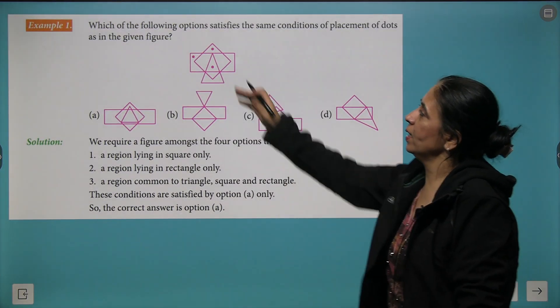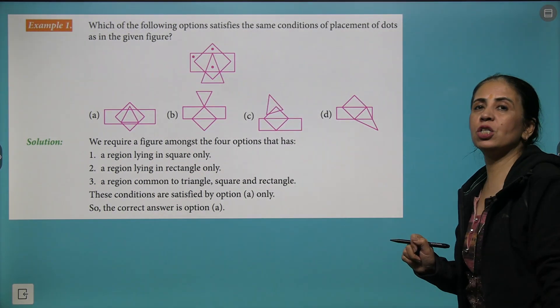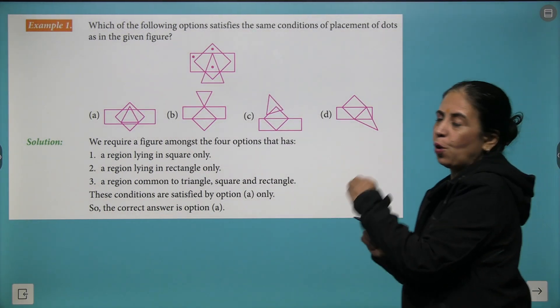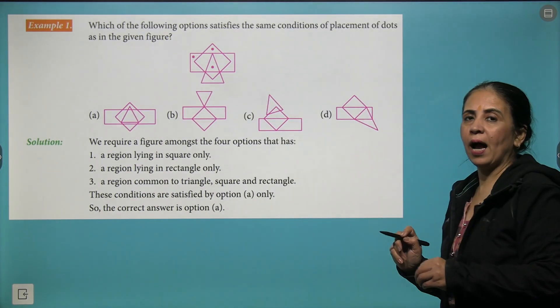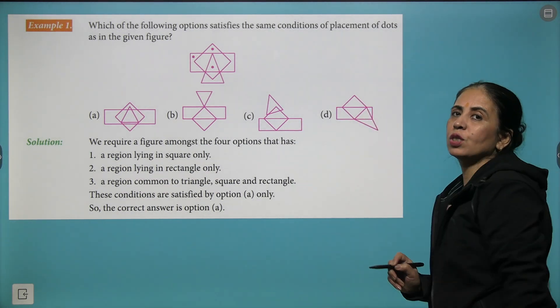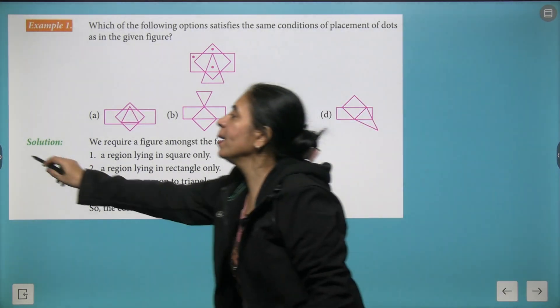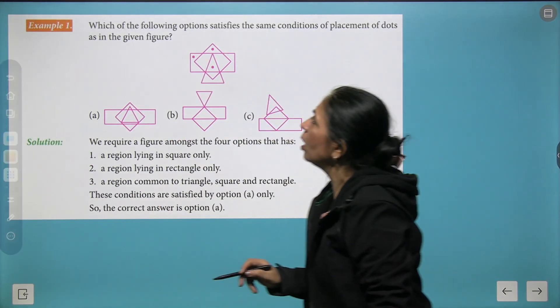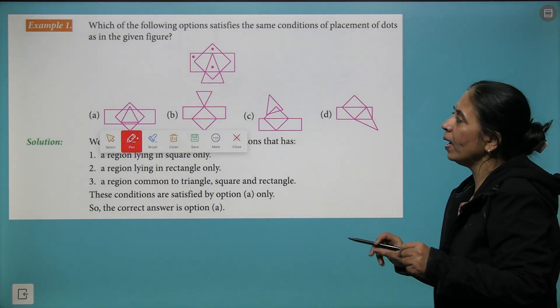Now let's see more examples based on it. Here we have a question and you have different options. You need to find out which of these satisfy the given dot situations. Coming at the first dot, it exists only in the square.